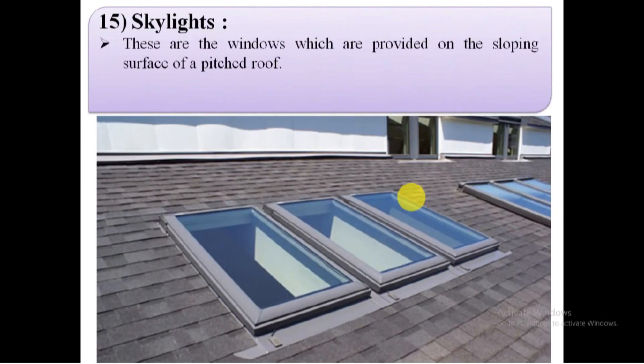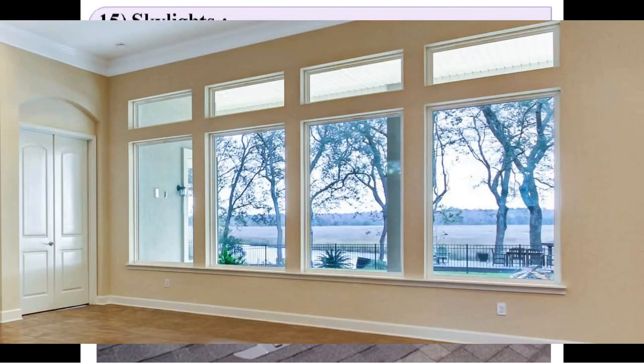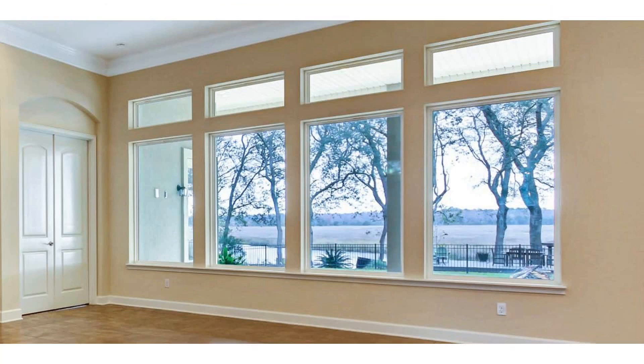15. Skylights. They are provided on the roof to admit light. The window projects above the top of the sloping surface. They run parallel to the sloping surface. 16. Fixed windows. It consists of a frame to which shutters are fixed. The shutters are fully glazed. These windows are provided for admitting light and for providing vision to the outside. This is a window which is always closed in such a way that it can never be opened.